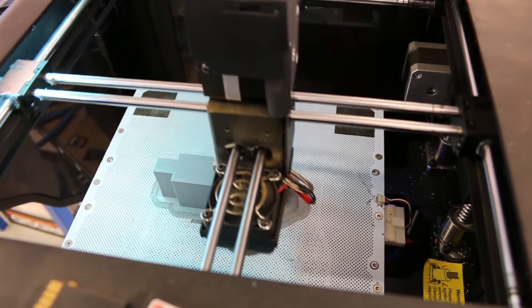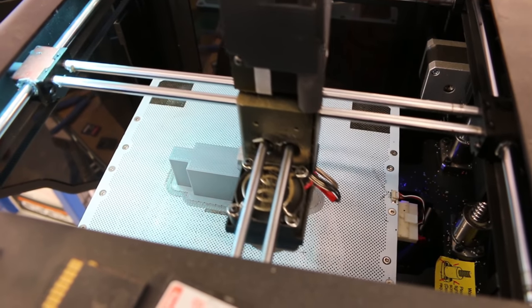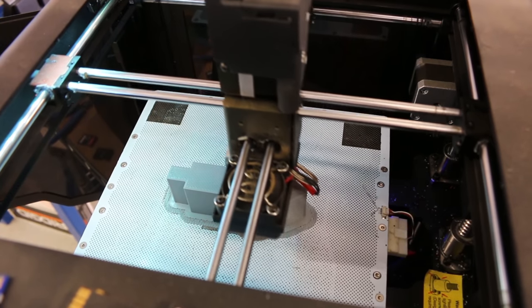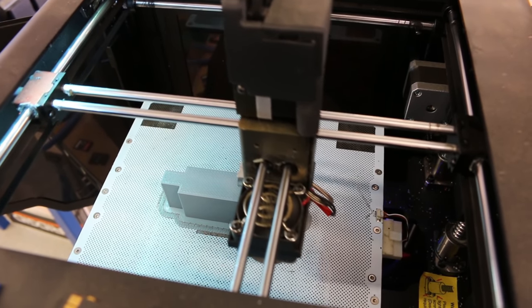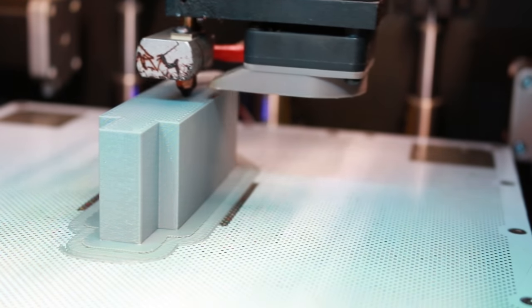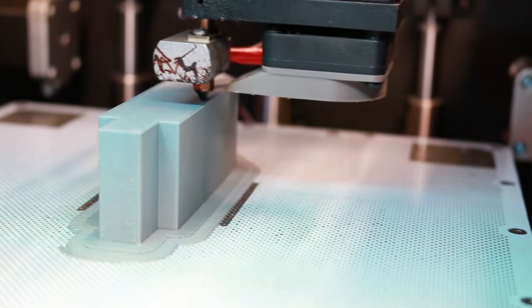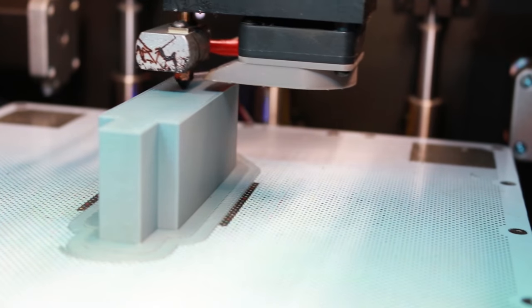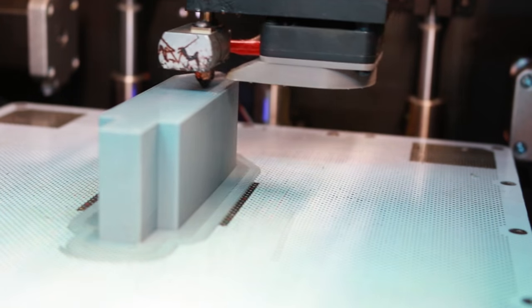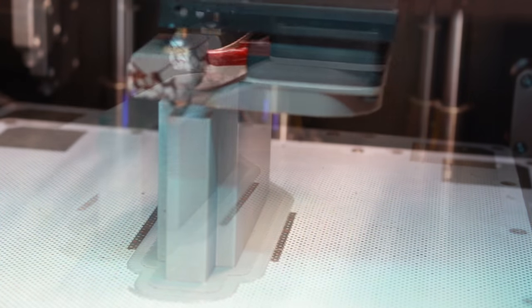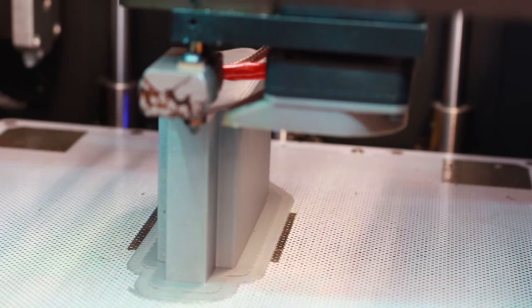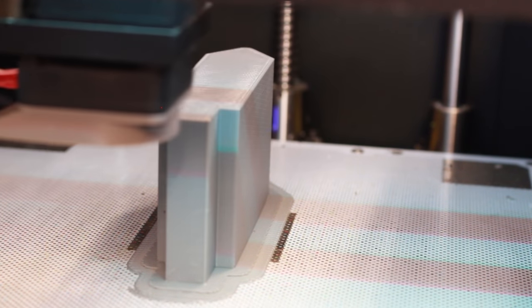The next step will be to take the file that we've created in the Zortrax slicing software and bring it out to the Zortrax M200 3D printer. You can see the very close infill pattern which is nearly as good as printing in a solid format. The infill structure is a latticework of filament oriented at 45 degree angles. This provides for an incredibly strong and rigid structure. And because of this high density infill pattern, it takes quite a bit of time for these individual parts to print.